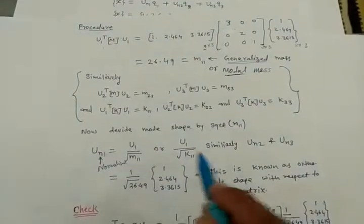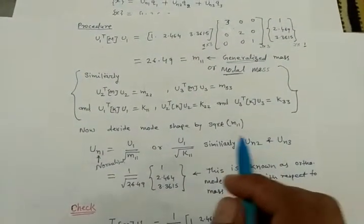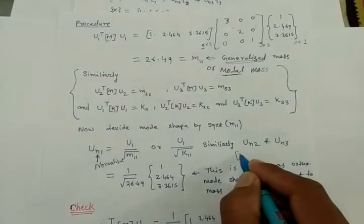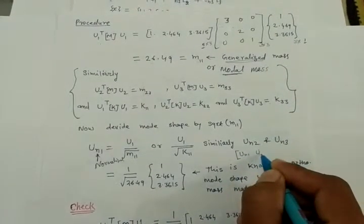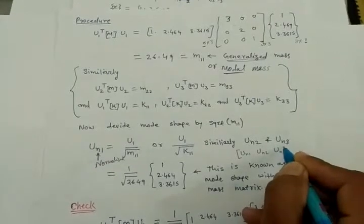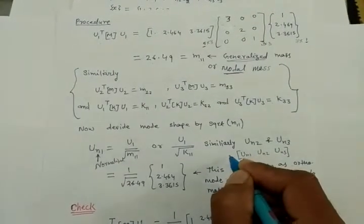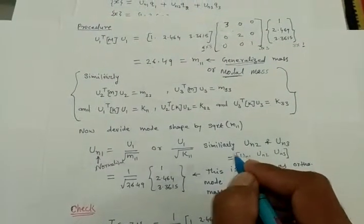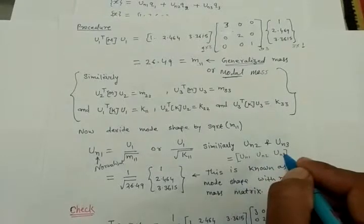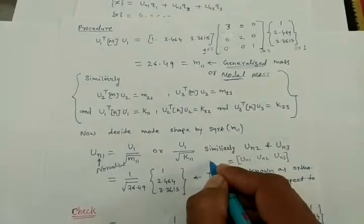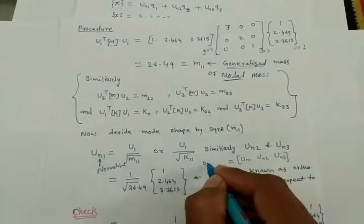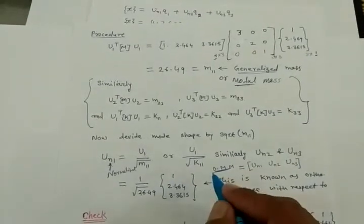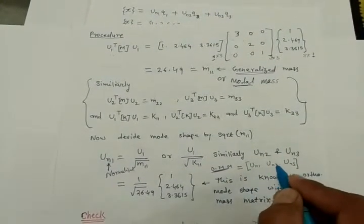Similarly we can calculate un2 and un3. If we write un1, un2, and un3 together in a matrix form, that matrix is known as the orthogonal modal matrix — similar to the earlier modal matrix but now with the word 'orthogonal' added, because these vectors are now orthogonal.